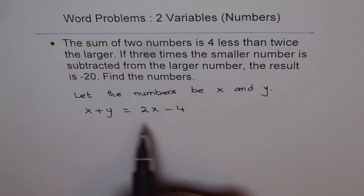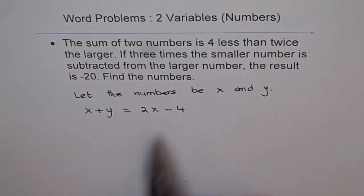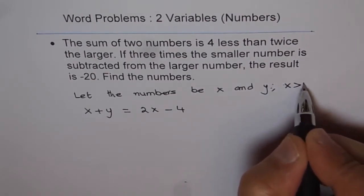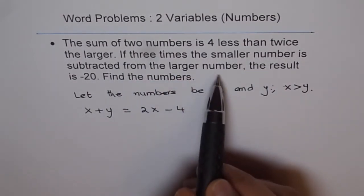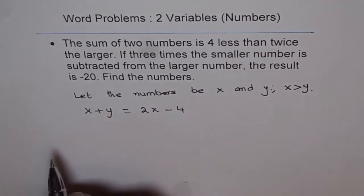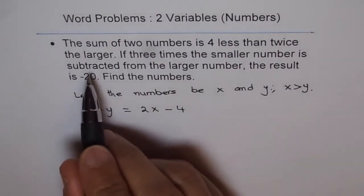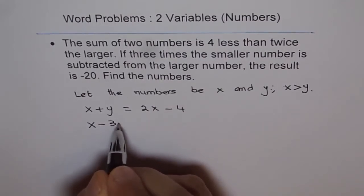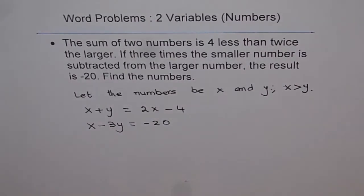Once you write the statement, read it — does it fit? The sum of two numbers is 4 less than twice the larger — yes, that's fine. We are assuming x is greater than y. If 3 times the smaller number is subtracted from the larger number, the result is minus 20. So 3 times y is subtracted from x, meaning x minus 3y equals minus 20.